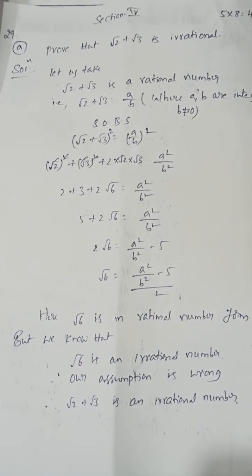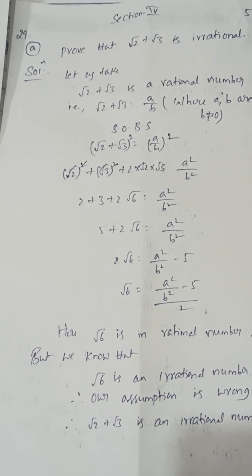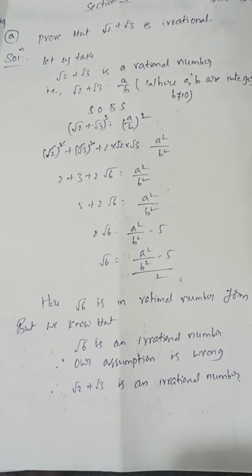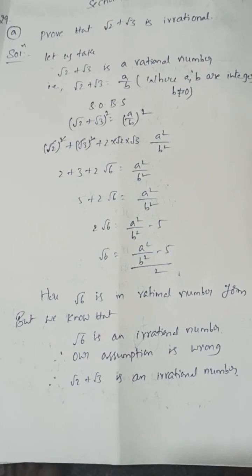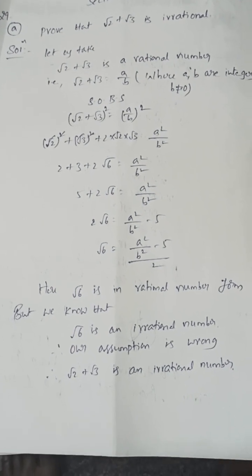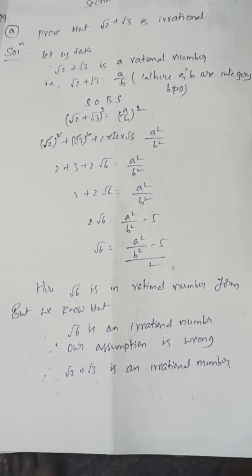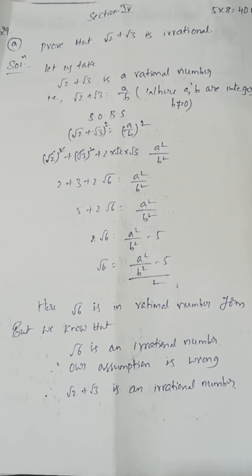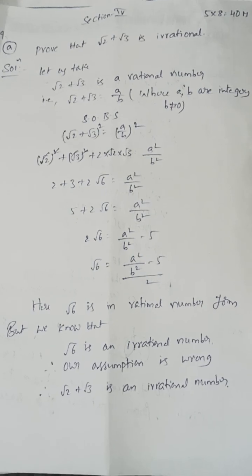Prove that √2 + √3 is an irrational number. By contradiction: assume √2 + √3 is rational, equal to a/b where a, b are integers and b ≠ 0. Squaring both sides: 5 + 2√6 = a²/b², so √6 = (a²/b² − 5)/2, which is a rational form. But √6 is irrational — contradiction. Therefore √2 + √3 is irrational.